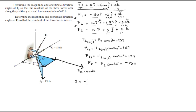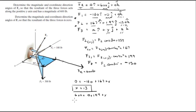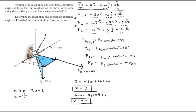The first equation: 0 equals negative 180 plus 167 plus x, therefore x equals 13. The second equation: 600 equals 0 plus 199 plus y, which means y equals 401. The last equation: 0 equals 0 minus 150 plus z, so z equals 150.